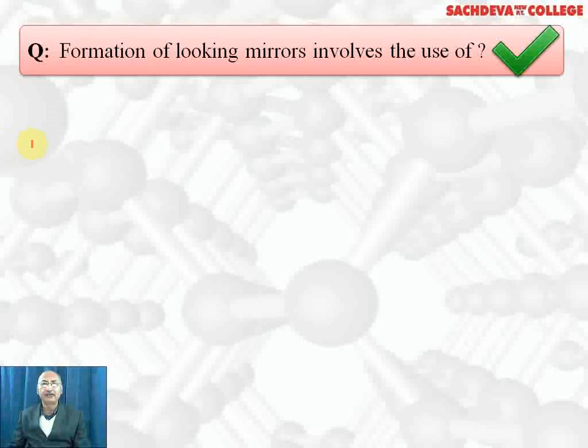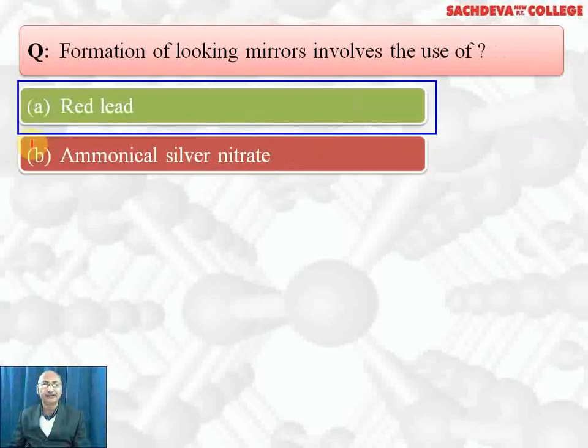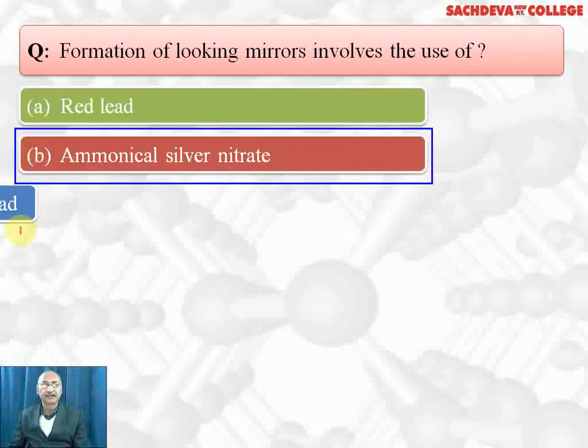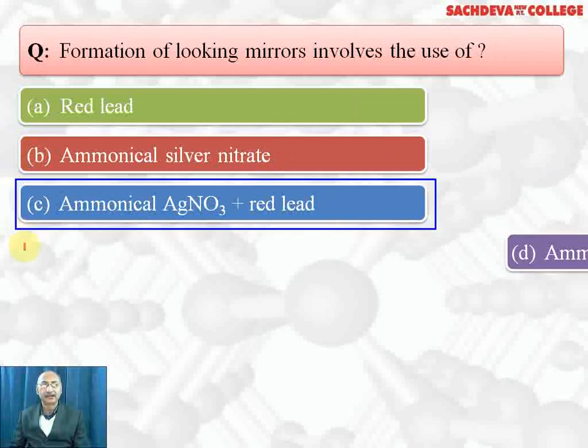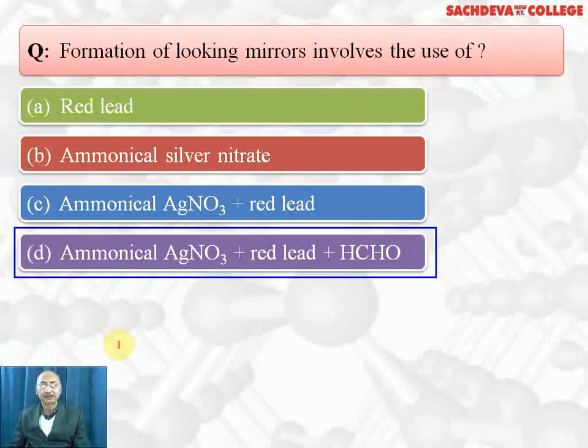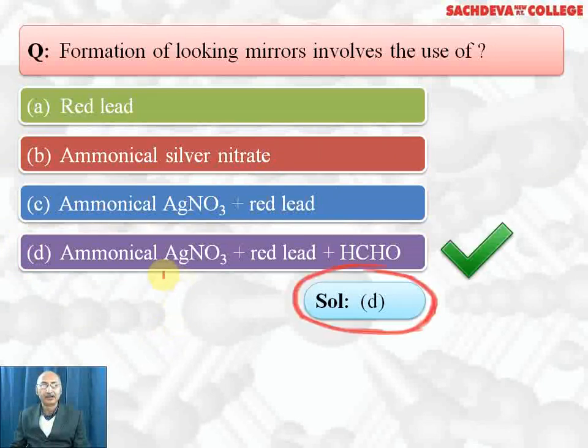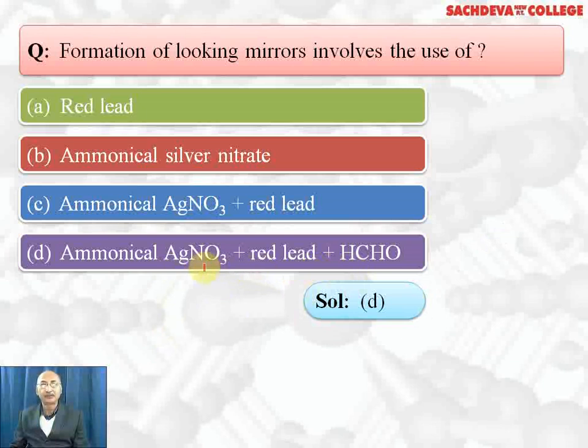Formation of looking glass involves ammoniacal silver nitrate plus red lead. Correct answer is D part. Red lead is used on the back side to form a layer so that looking mirror is formed.